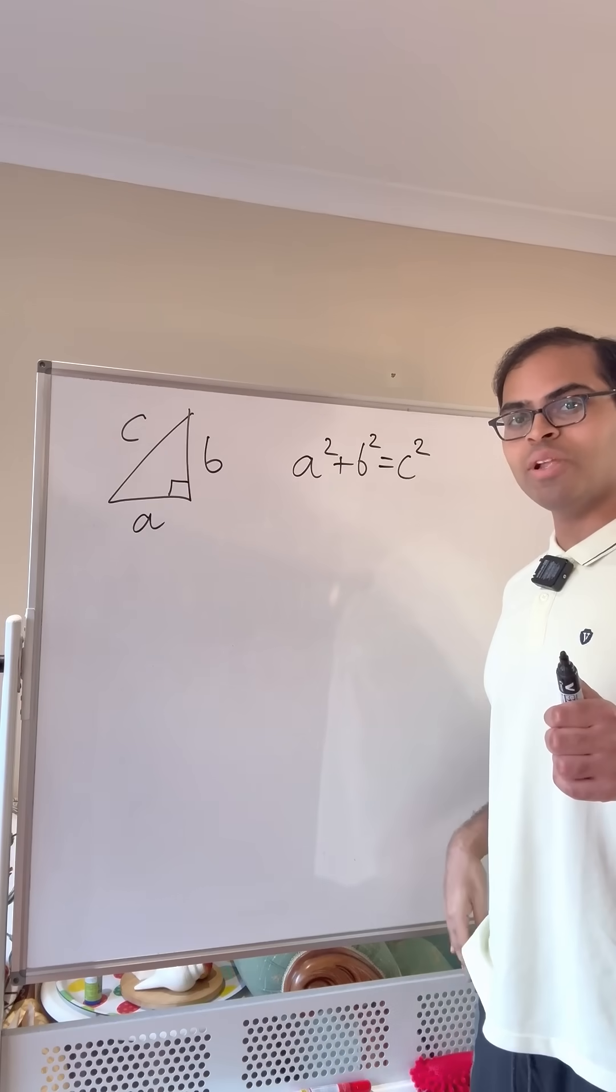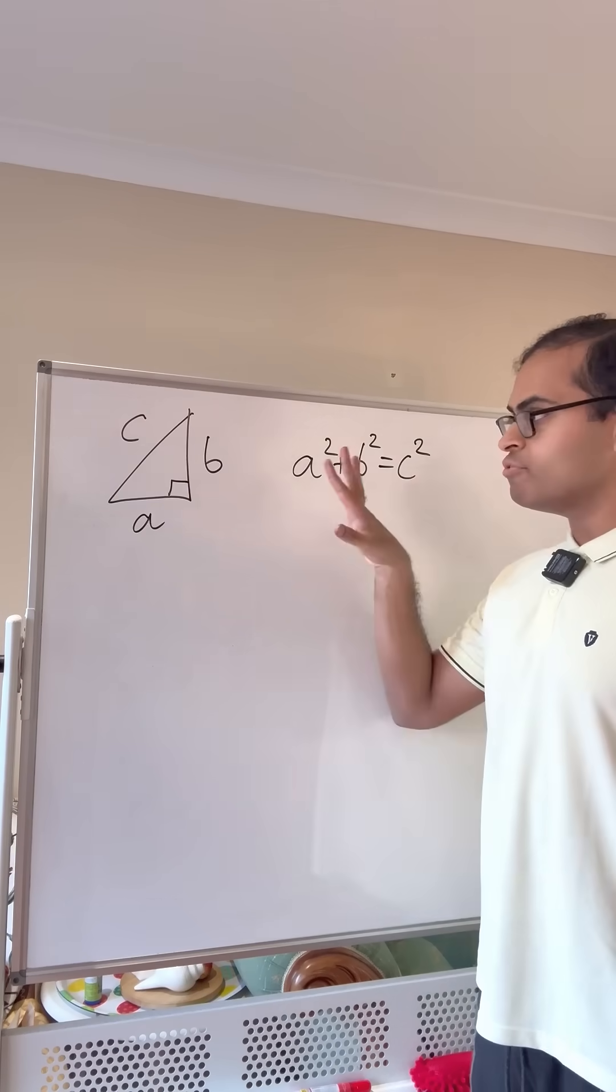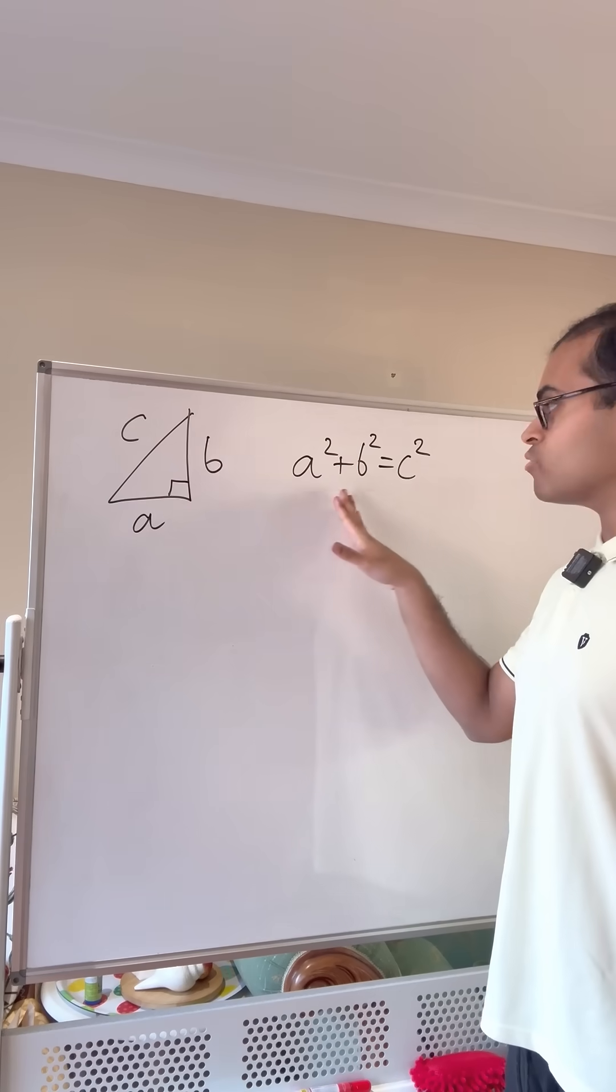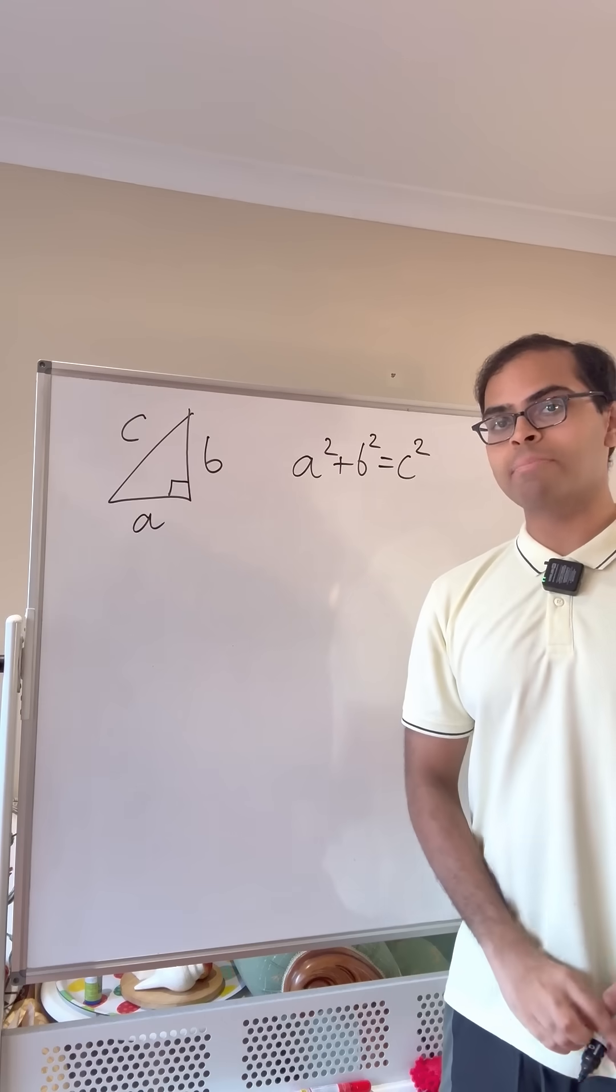A Pythagorean triple is three whole numbers a, b, and c that form the sides of a right triangle. So by the Pythagorean theorem, a squared plus b squared is c squared, but they've got to be whole numbers.